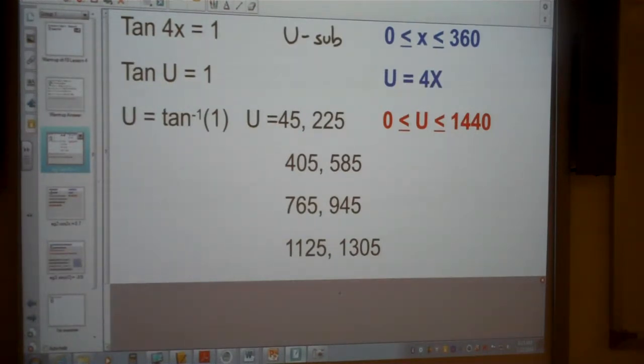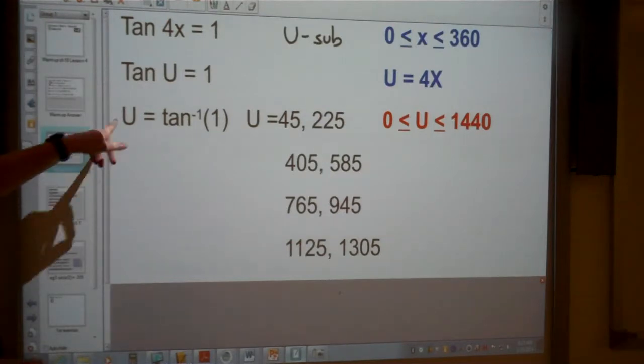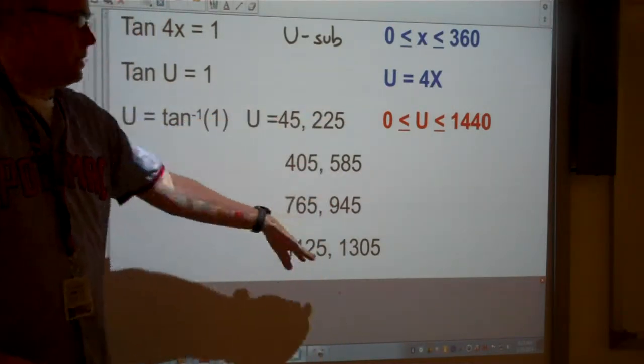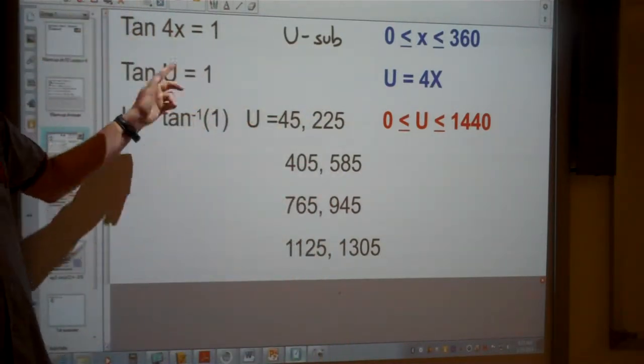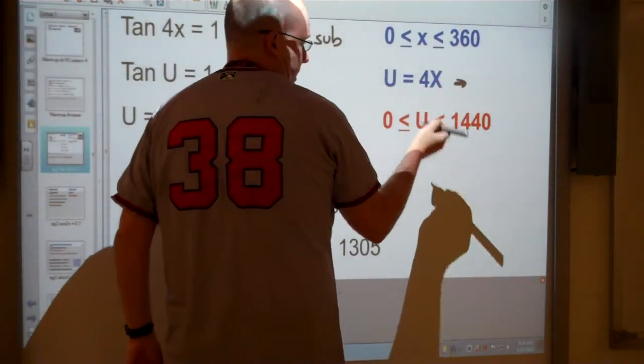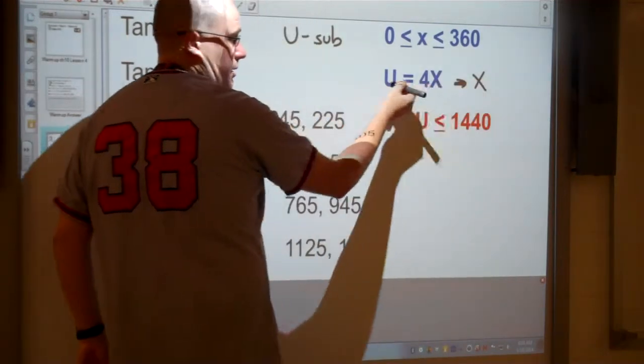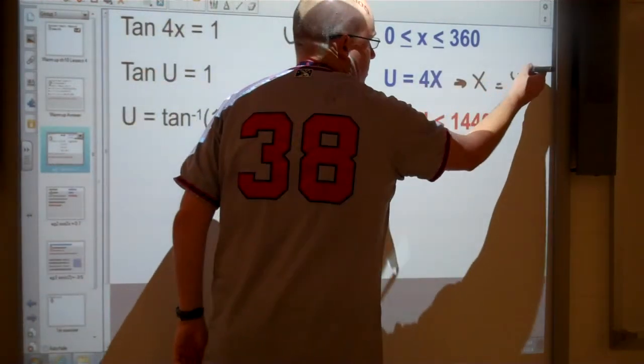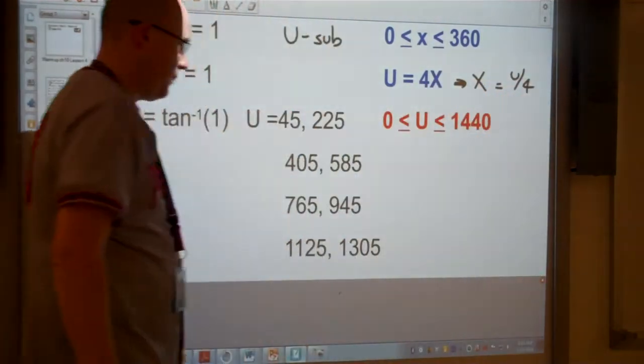Now that looks like we've solved the question. We've managed to find our solutions. Look what we found. We found the U values. Our question says x. So now we need to go back and change these to previous answers. So if U equals 4x, that tells us if we want to find x, if we solve this equation, it's going to equal U divided by 4.